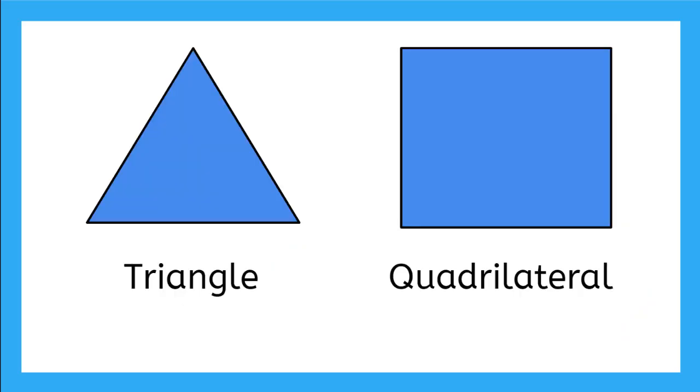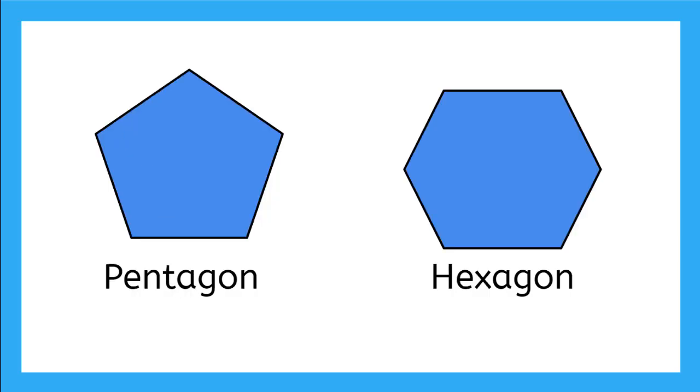Here are some common polygons with three sides all the way up to ten sides. Here is a triangle where tri means three and a quadrilateral where quad means four, a pentagon where pent means five, and a hexagon where hex means six.